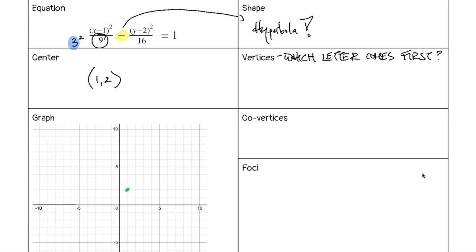If we switch them and have y first, then the number under y tells us where the vertices are. So because x comes first in this equation, the vertices are in the x direction. In this case 3 is considered a, so from the center we go 1, 2, 3 in each direction to get our two vertices.